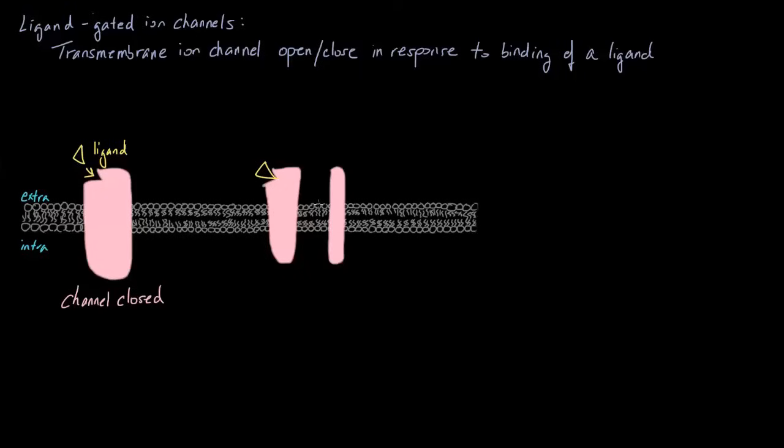So once it binds, a channel opens in a different place, and the ion permeability of the entire plasma membrane can quickly change. Remember, this is not just one thing happening. When these ligands are binding, there are many of these channels scattered throughout these cell membranes, so all of these are opening and closing all at once.